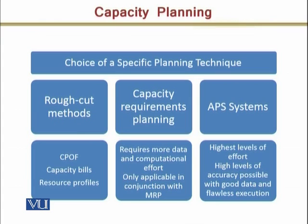Every two to three units, the model changes, so product mix بہت زیادہ ہوتا ہے — تو ادھر ہم capacity bills use کر سکتے ہیں، کیونکہ capacity bills product mix کو incorporate کرتے ہیں اور computationally it is not as expensive as resource profiles. تو resource profiles کی ضرورت نہیں ہے۔ ہم capacity bills use کر سکتے ہیں۔ لیکن اگر product mix کے اندر کچھ زیادہ فرق نہیں ہے اور production rate تقریباً same ہے تو we can easily use capacity planning using overall factors.